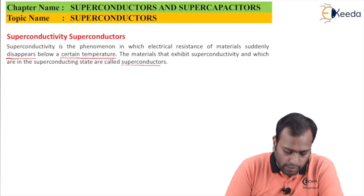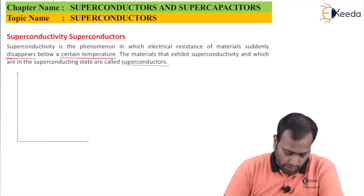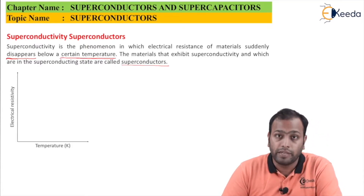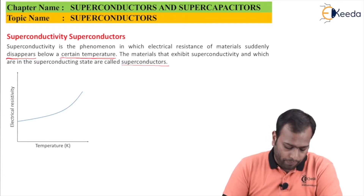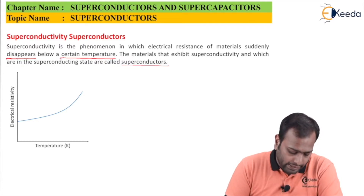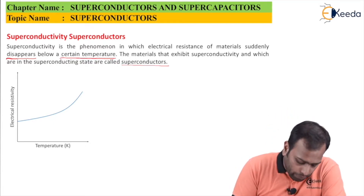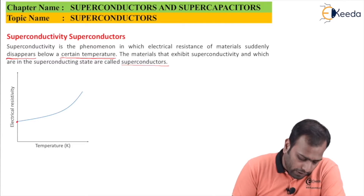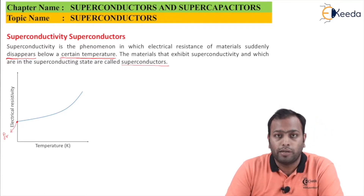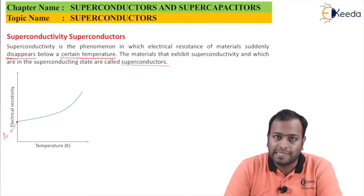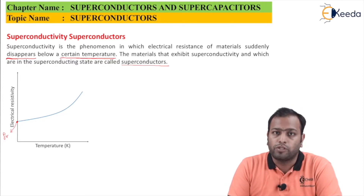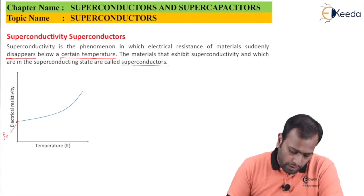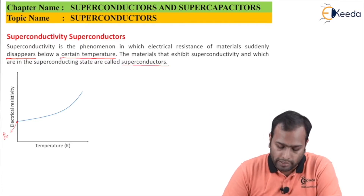On a graph of temperature versus electrical resistivity, normal metals show decreasing resistivity as temperature decreases, eventually becoming constant at zero Kelvin. This constant value is called rho-r, or residual resistivity. Residual resistivity is defined as the resistivity of a metal at zero Kelvin, or absolute zero.